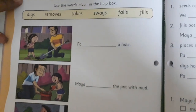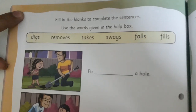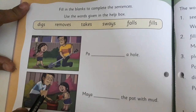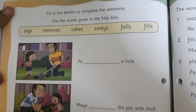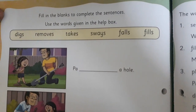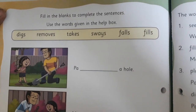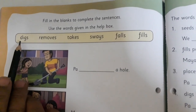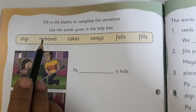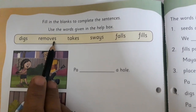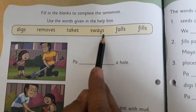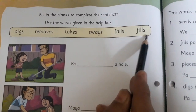Children, first of all you are going to write the date at the top left corner. Now let me read the instruction for you: fill in the blanks to complete the sentences, use the words given in the help box. The words are: digs, removes, takes, sways, falls, and fills.